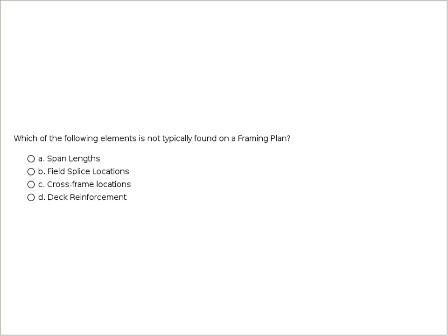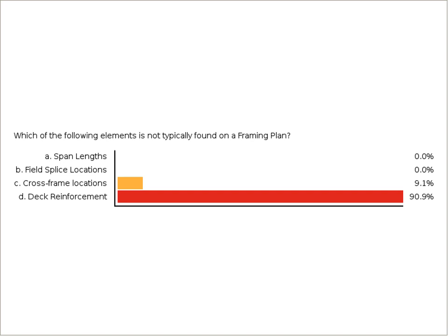Quiz question: which of the following elements is not typically found on a framing plan? A, span length; B, field splice locations; C, cross-frame locations; or D, deck reinforcement? The correct answer is D, deck reinforcement, which is actually shown on the typical section.